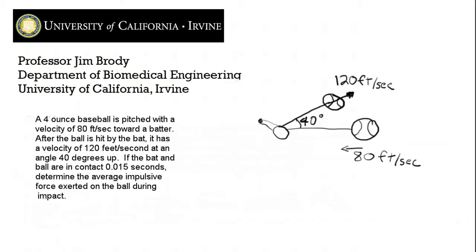If the bat and ball are in contact for 0.015 seconds, that's 15 milliseconds, determine the average impulsive force exerted on the ball during the impact.